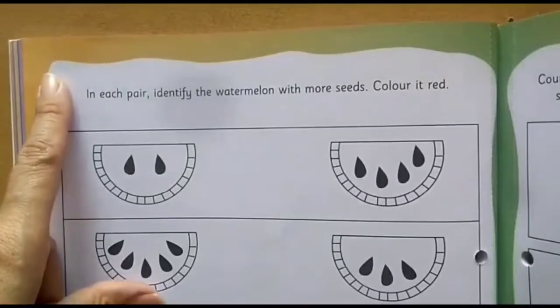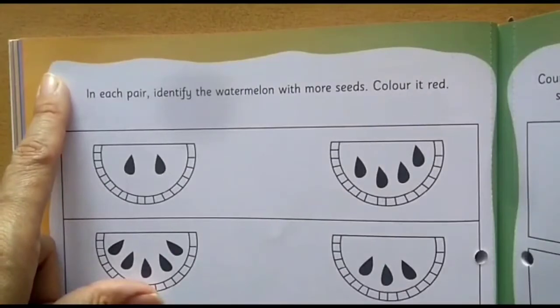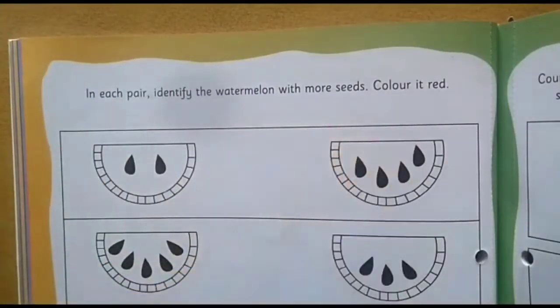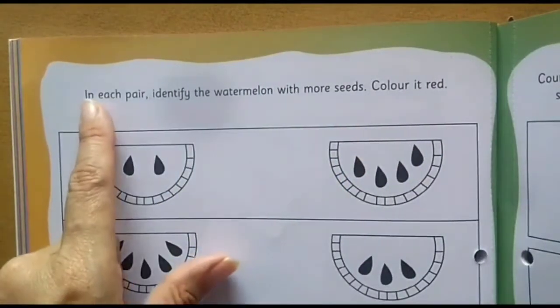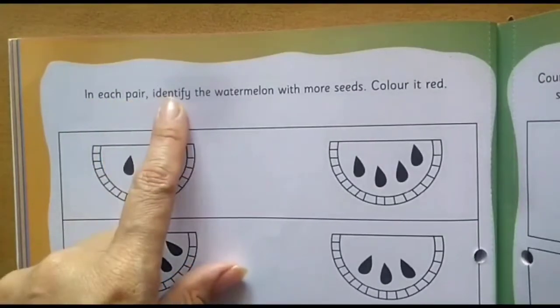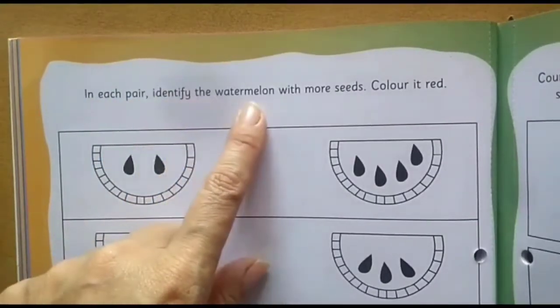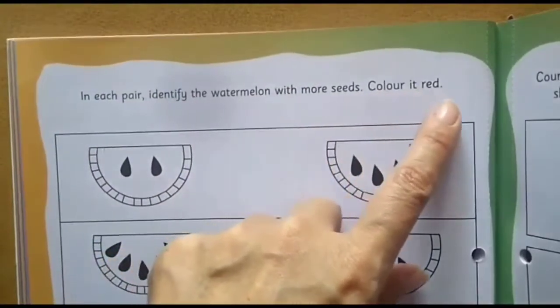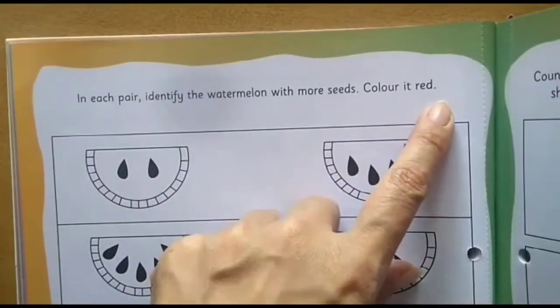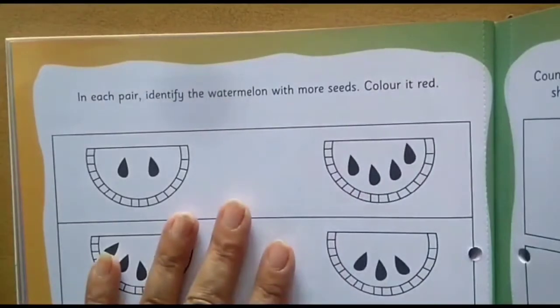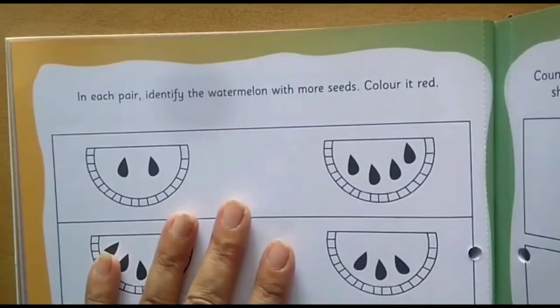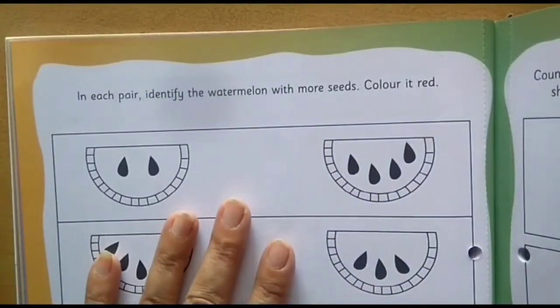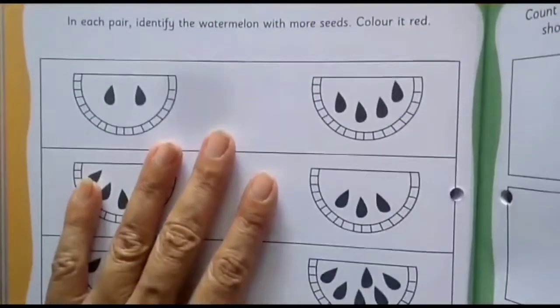As usual on top left corner we will write today's date and after that I am going to read the instructions for you. In each pair identify the watermelon with more seeds. Color it red. So what do we need to do? First we need to identify the watermelons with more seeds and then we will color it. Let's begin.